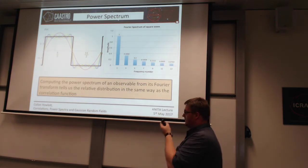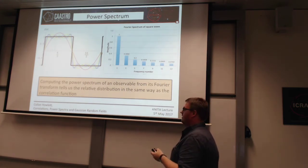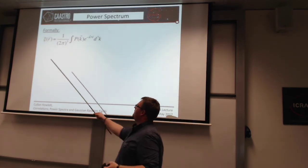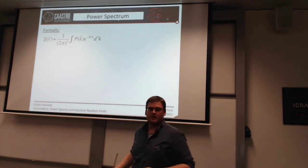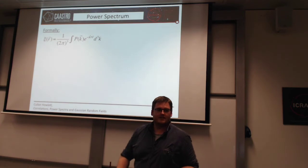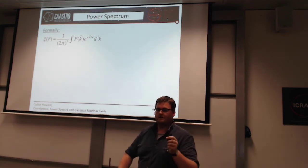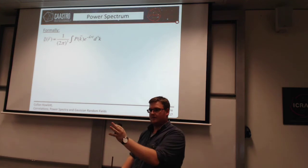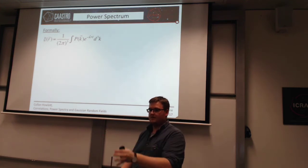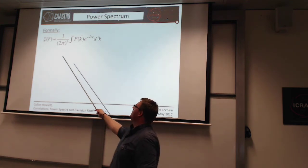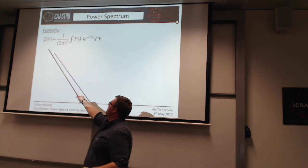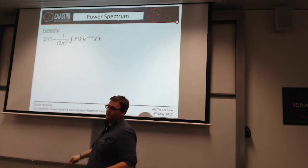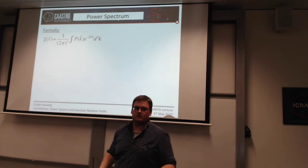More formally, and this is true regardless of the field you work in, the correlation function is just the Fourier transform of the power spectrum. In the same way that you can calculate the correlation function from the real space observable and the power spectrum from the Fourier space observable, you can calculate the power spectrum as the Fourier transform of the correlation function, and vice versa.